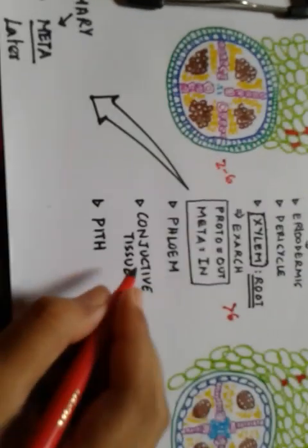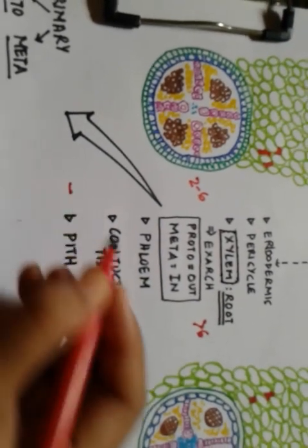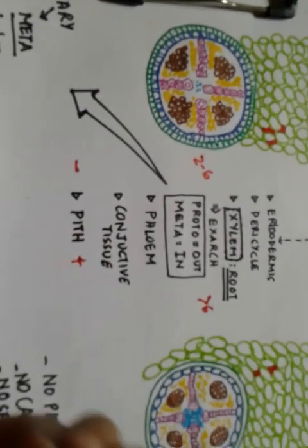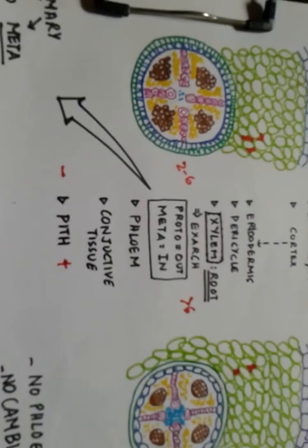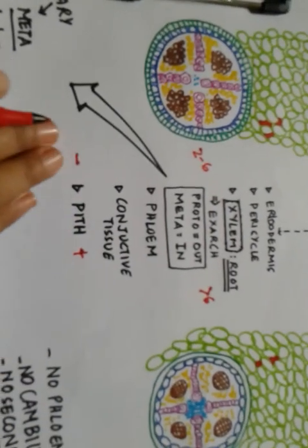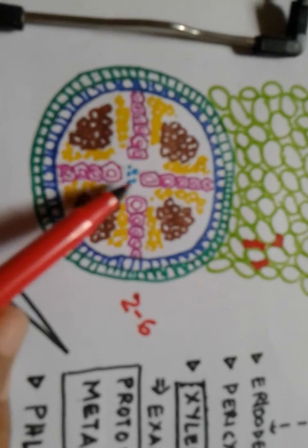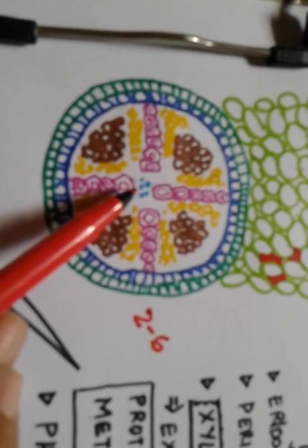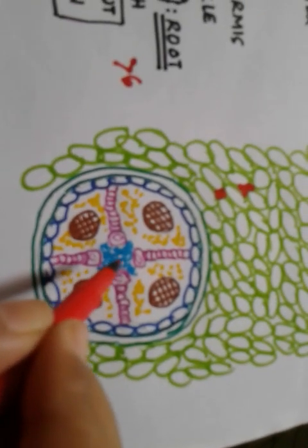Another key difference is the pith: in monocot roots, the pith is well developed, while in dicot roots it is either absent or inconspicuous — very poorly developed or barely prominent. I've shown this difference in the diagram using blue dots representing pits — very few and less prominent in dicot, very prominent and extensive in monocot.